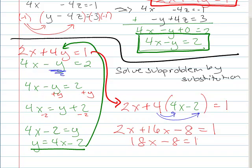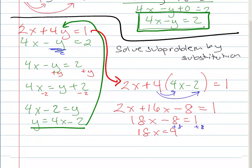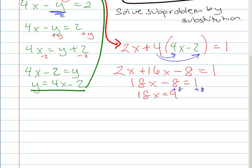So I've got 2X plus 4 times 4X is 16X and then minus 8 equals 1. So combining my terms, I'm gonna add 8 to both sides and end up with 18X equals 9 and then I'll divide both sides by 18. So I get X equals 9 over 18 and I can reduce that to X equals 1 half.